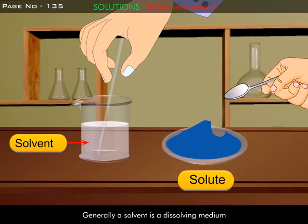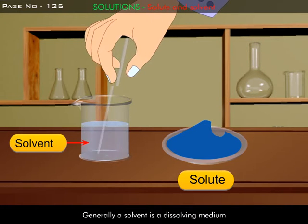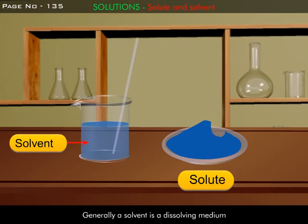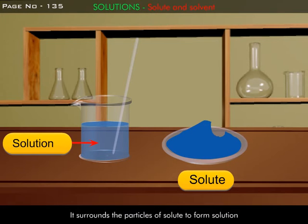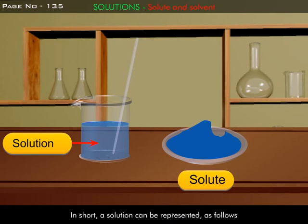Generally, a solvent is a dissolving medium. It surrounds the particles of solute to form solution. In short, a solution can be represented as follows: solute plus solvent gives solution.